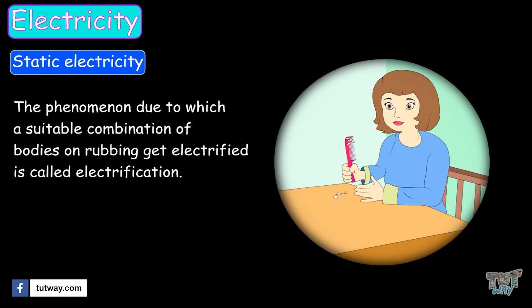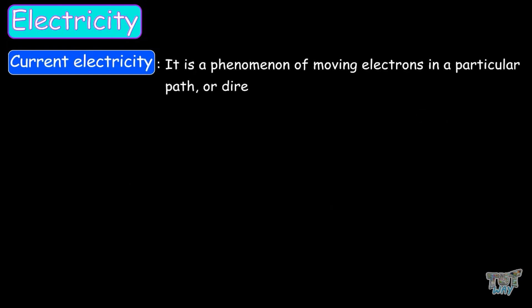Now let's learn about the other type of electricity, current electricity. Current electricity is a phenomenon of moving electrons in a particular path, or direction, that is the flow of electrons through a conducting material.